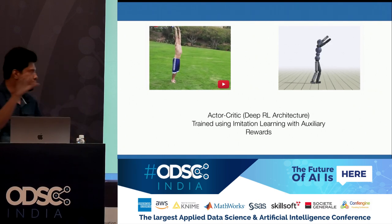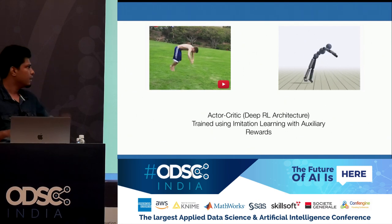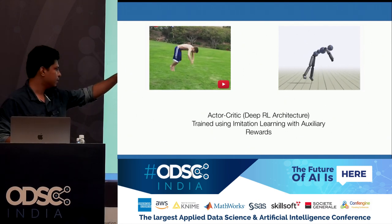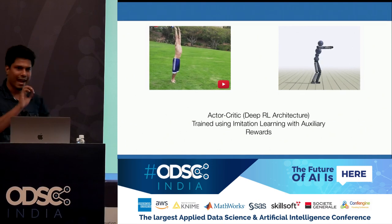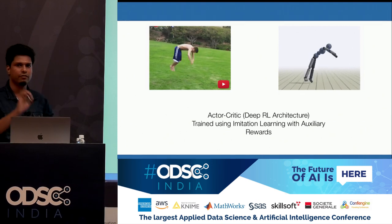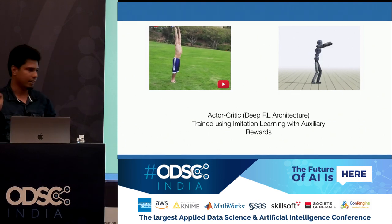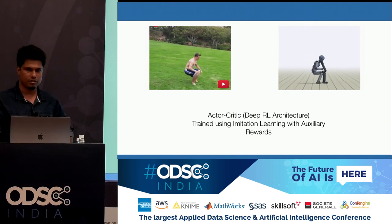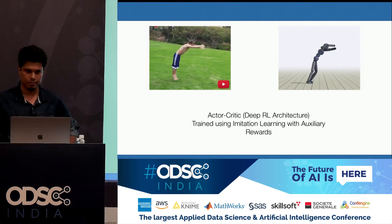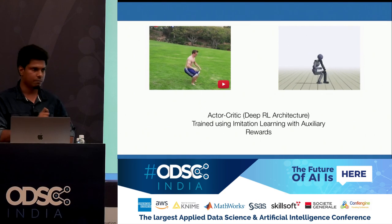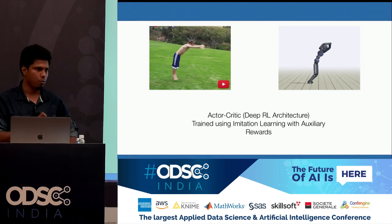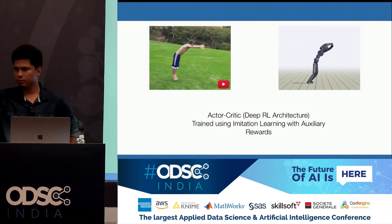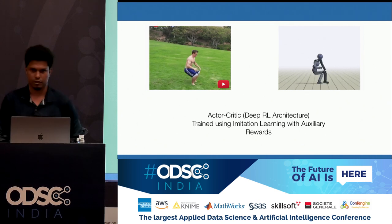The conclusion is: our acrobatic agent uses an actor-critic network, which is a kind of deep RL architecture, and it is trained using imitation learning with auxiliary rewards. This brings an end to my portion of the talk. Shiv will take it from here.